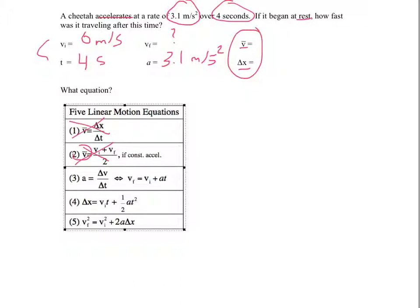Next, we have acceleration is change velocity over time, which can be rewritten as vf equals vi plus at. Well, let's see. We're looking for vf. We have vi, we have a, we have t. This is an equation we can use.